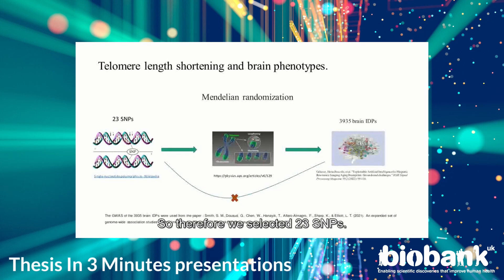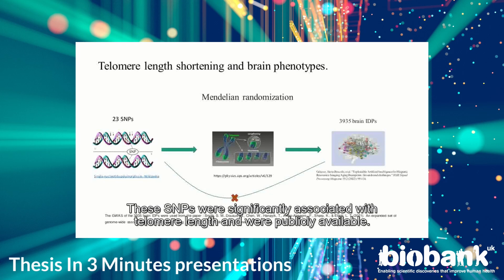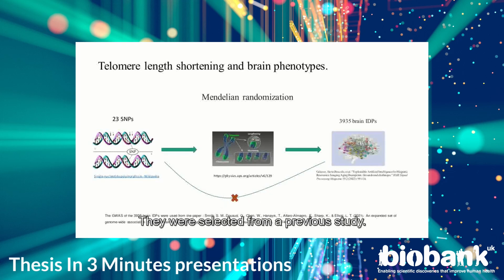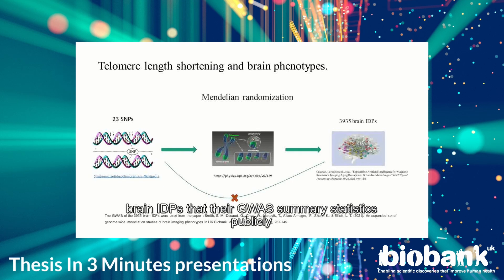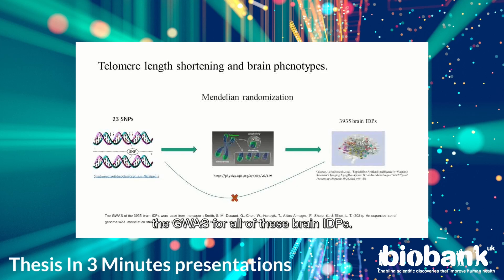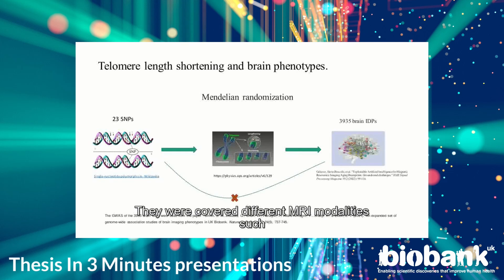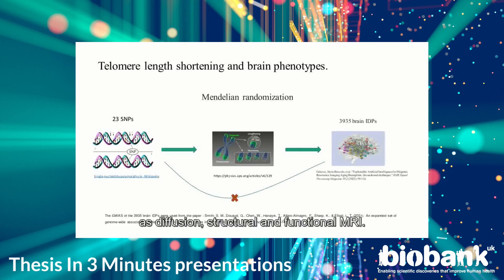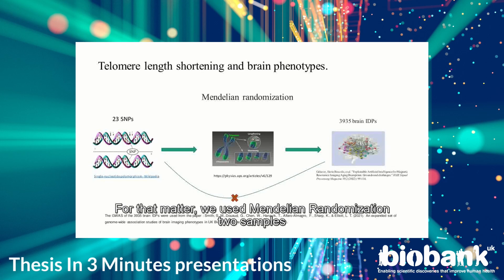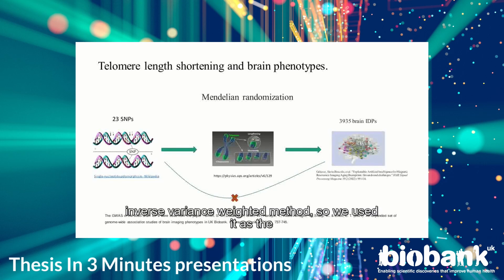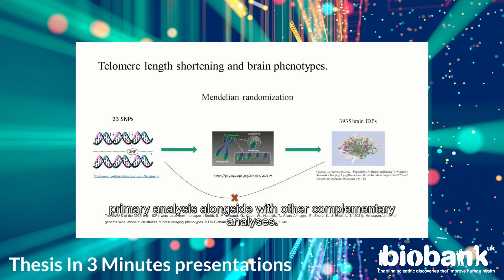We selected 23 SNPs that were significantly associated with telomere length and were publicly available, selected from a previous study. For the Brain IDPs, we selected around 4,000 Brain IDPs whose GWAS summary statistics are publicly available, using UK Biobank data to perform the GWAS. They were covered with different MRI modalities such as diffusion, structural, and functional MRI. We used these IDPs as the outcome and applied Mendelian randomization. Inverse-variance weighted method was used as the primary analysis alongside other complementary analyses.